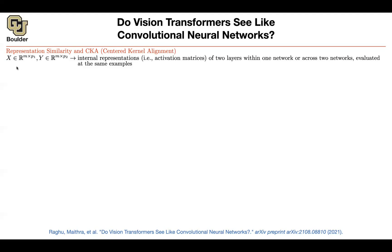Or this could be two entirely different neural networks — maybe one ResNet and one VGG, or one ResNet and one transformer — and you want to compare the intermediate features between them. Obviously they have different dimensions, so it's not going to be easy to compare them. You need some preprocessing on these two matrices.